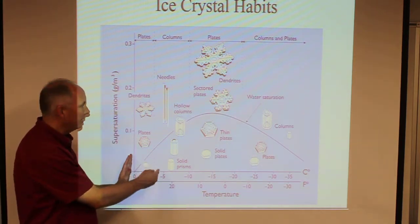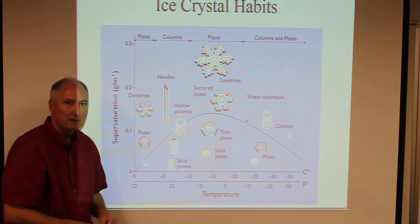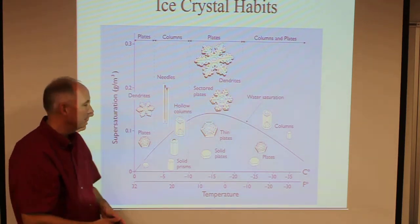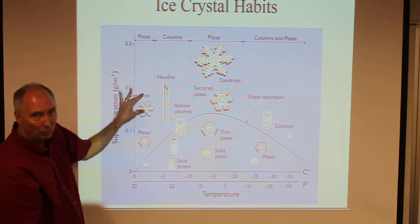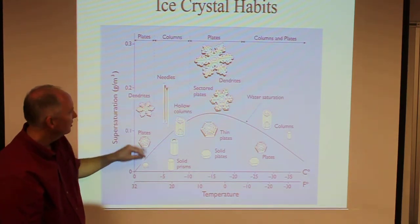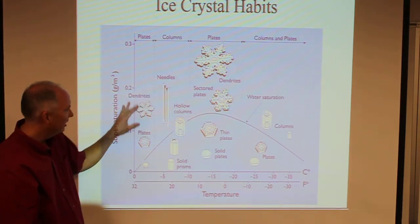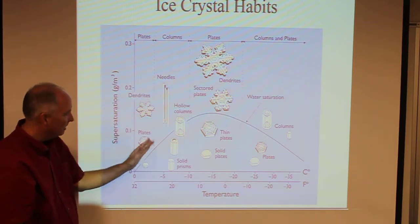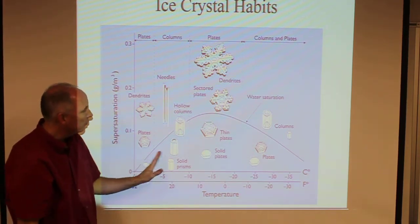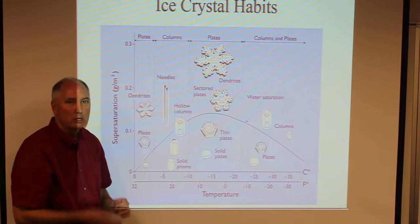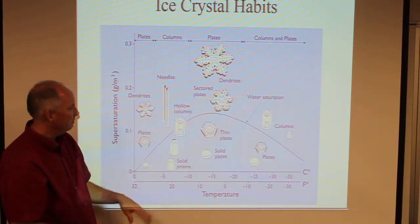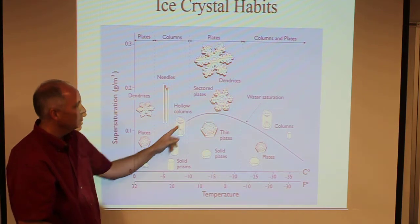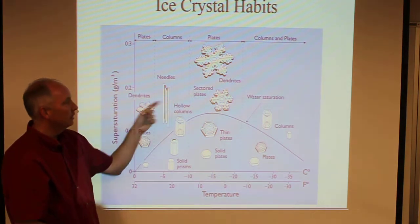We generally divide this into temperature regimes. Between 0 and -4°C, the most common crystal to form is hexagonal plates, unless you have really high water concentrations—then you can get dendrites. Between -4 and -10°C, the most common crystal is actually needles, because most of the time we are supersaturated with respect to water.